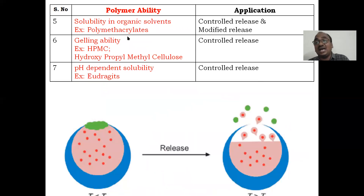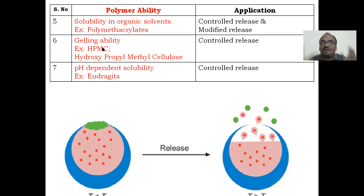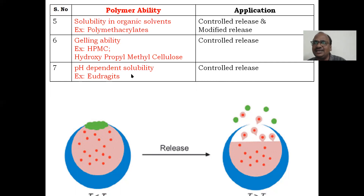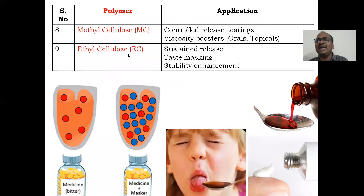Solubility in organic solvents — polymethacrylates show different solubility in organic solvents; they dissolve in some organic solvents but not others. This property is used for controlled release and modified release. Gelling ability — some polymers become a gel; for example, HPMC (hydroxy propyl methyl cellulose) is very popular and important for controlled release tablets. pH-dependent solubility — Eudragits, which all my projects are based on, show pH-dependent solubility. If you change the pH, solubility increases; if you change it back, the Eudragit will not dissolve. This is used for controlled release.